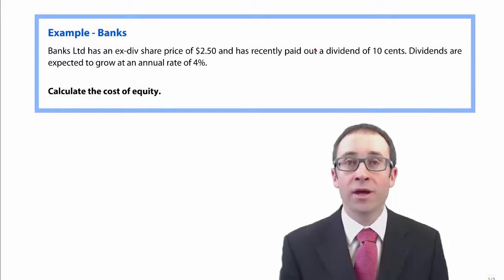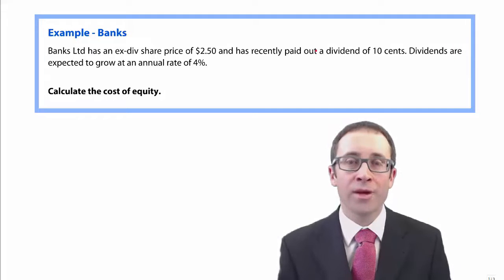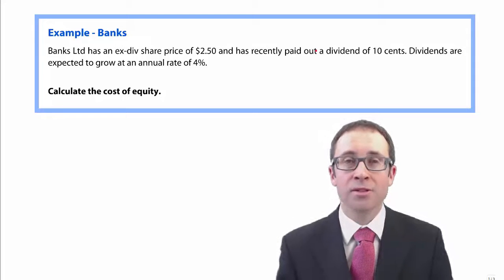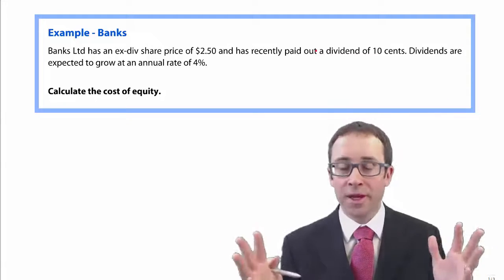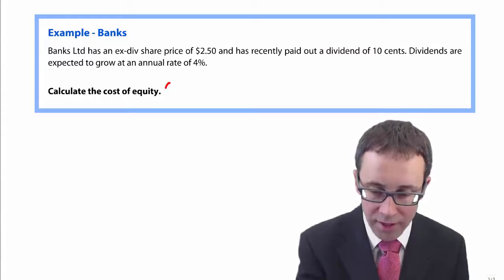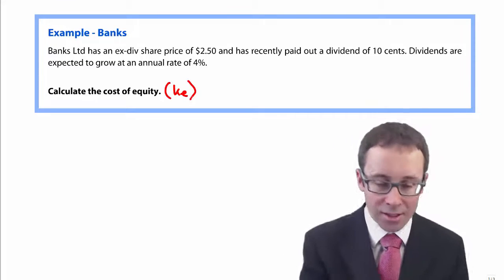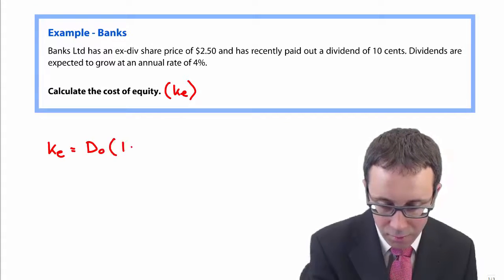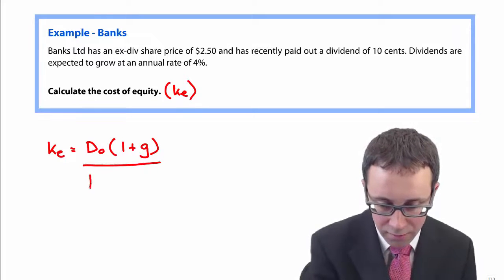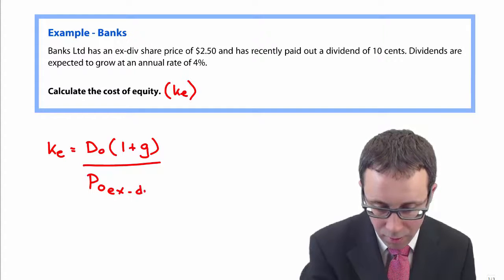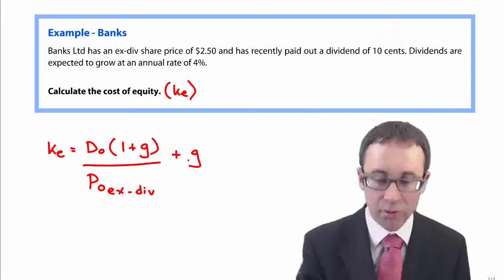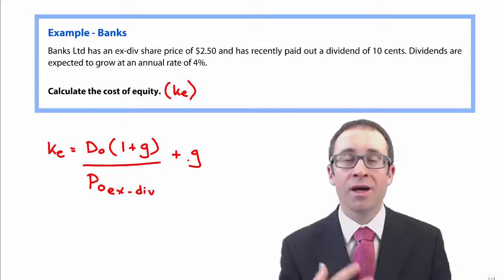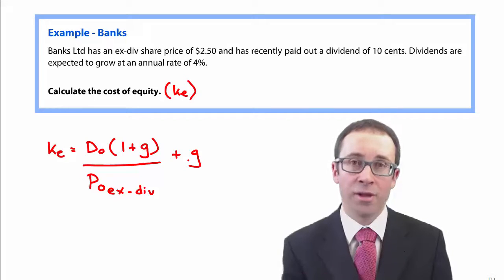Let's go through and have a look at a calculation of the cost of equity using the formula from the previous video. This will put your mind at rest that there's nothing too complicated — other than to remember the formula and apply the numbers. The cost of equity is KE, and the formula is: KE equals D0 multiplied by (1 plus G) divided by P0 XDIV, plus G. In the exam there's no need to rewrite the formula — you just need to plug the numbers in.